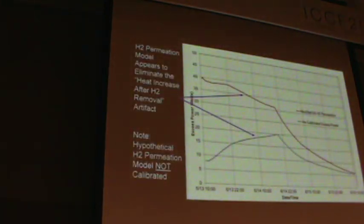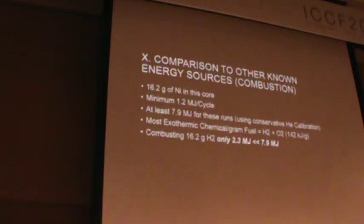Last one is going to be heat after death. It looks like that on the raw helium calibration. But when I hydrogen permeation adjust it, it looks like it declines steadily, has an elbow. I suspect maybe that the amount of hydrogen was no longer at the critical amount within the nickel to continue the reaction.